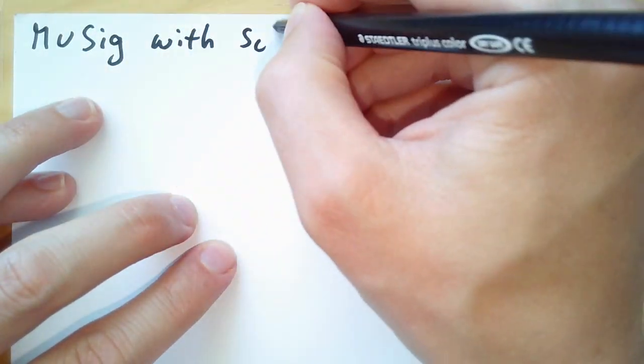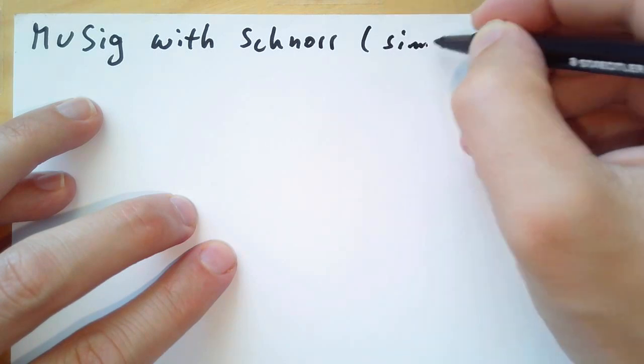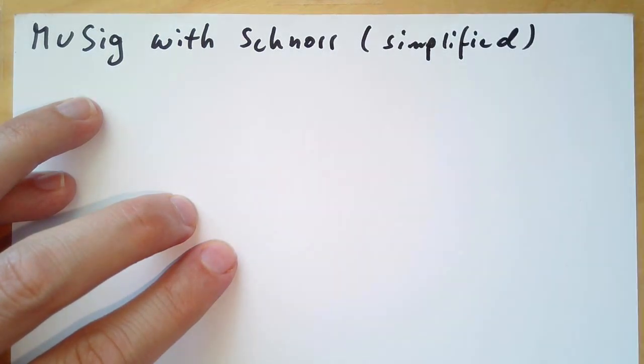Let's look at multisignatures with Schnorr signatures. This is a simplified version because I'm not telling you what's supposed to be in the hash function.